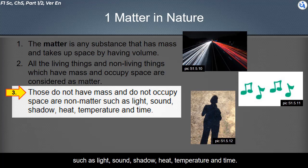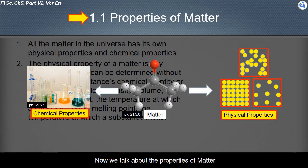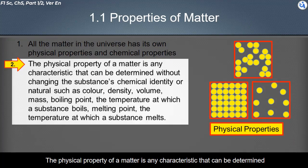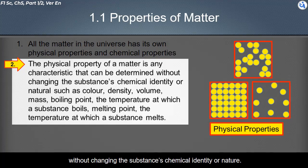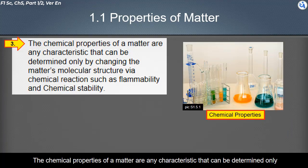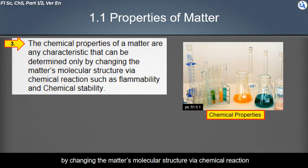Now we talk about the properties of matter. All matter in the universe has its own physical properties and chemical properties. The physical property of matter is any characteristic that can be determined without changing the substance's chemical identity, such as color, density, volume, mass, boiling point, and melting point. The chemical properties of matter are any characteristic that can be determined only by changing the matter's molecular structure via chemical reaction, such as flammability and chemical stability.